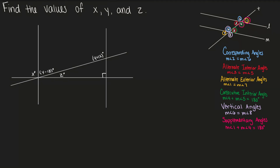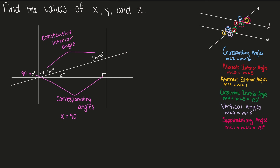Last example. We have two parallel lines, one horizontal line, and one line at an angle. First, x and the right angle are both on the same side of the parallel lines and on the same side of the transversal, so they're corresponding angles and congruent — this means x equals 90. Looking at our two outside parallel lines and that transversal, y − 18 and y + 12 are consecutive interior angles, so: y − 18 + y + 12 = 180. Combining like terms: 2y − 6 = 180. Add 6 to both sides: 2y = 186. Divide by 2, and y equals 93.